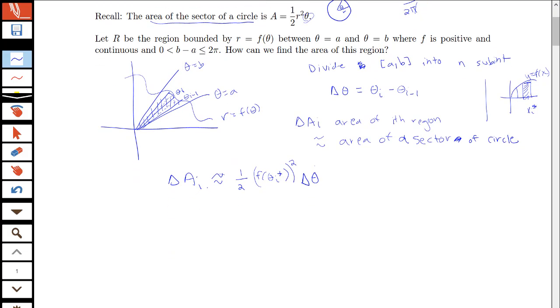So what can we say then? Well, if that's the approximate area of one of these little pieces, then my total area of the region is approximately the sum from i equals 1 to n of all of these areas of one-half f of theta i star squared times delta theta. And then we know that I could take n going to infinity.